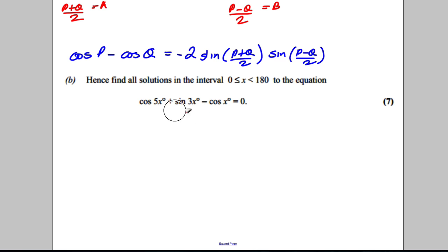For me, the only link between this part and the part above is this here: cos 5x take away cos x looks like the following two things up here. So I could state let P be equal to 5x and let Q equal x.